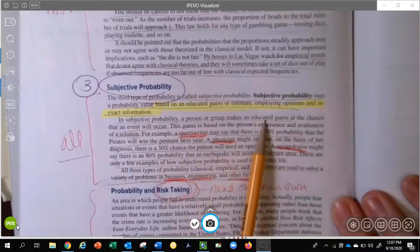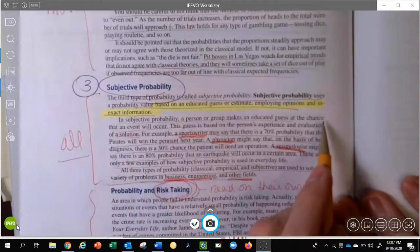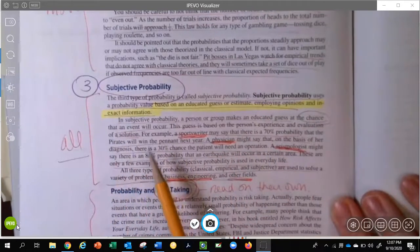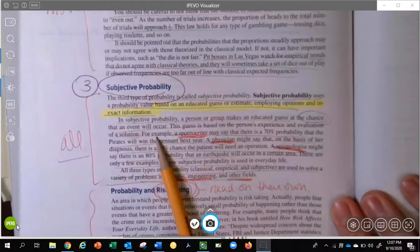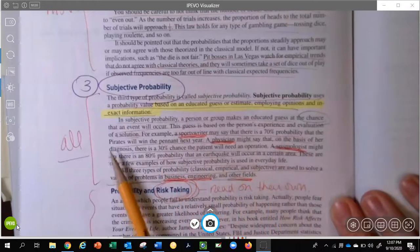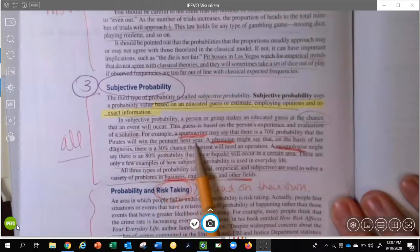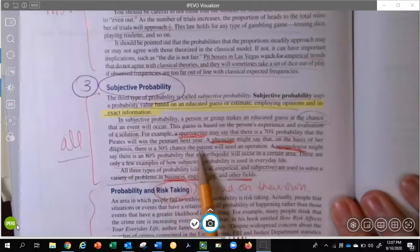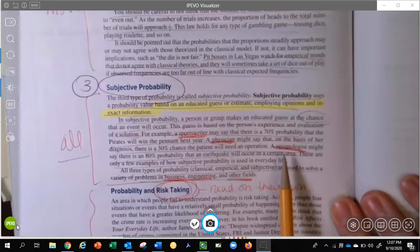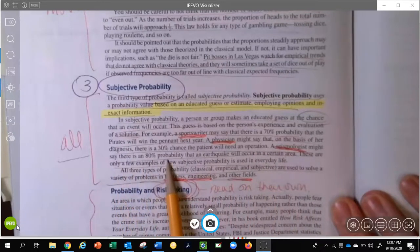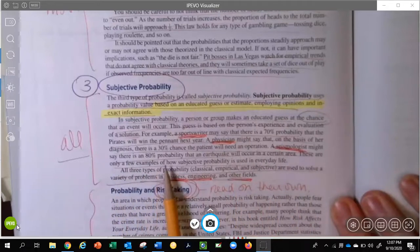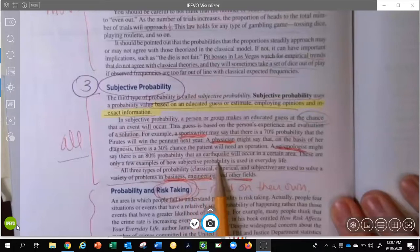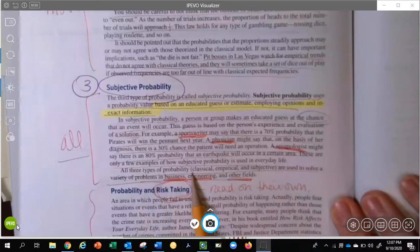In subjective probability, a person or group makes an educated guess at the chance that this event will occur. However, this guess is based on the person's experience and evaluation of a solution. For example, a sports writer may say that there's a 70% probability that the Pirates will win the pennant next year. A physician might say that on the basis of her diagnosis, there is a 30% chance that the patient will need an operation. A seismologist might say that there is an 80% probability that an earthquake will occur in a certain area. And these are only a few examples of how subjective probability is used in everyday life.